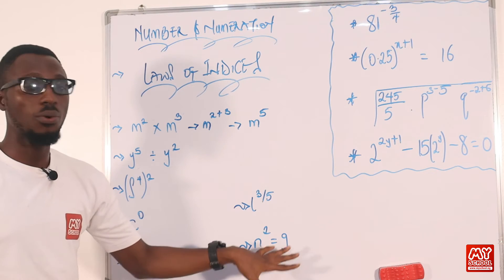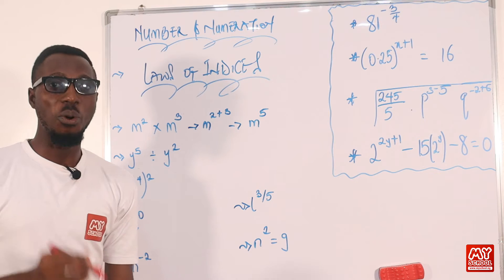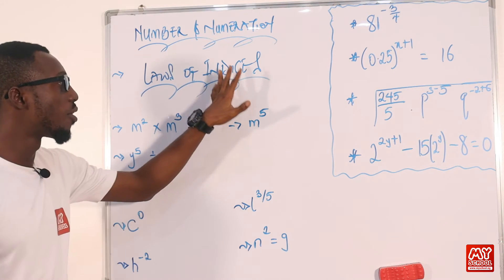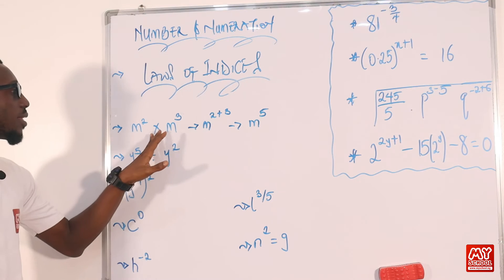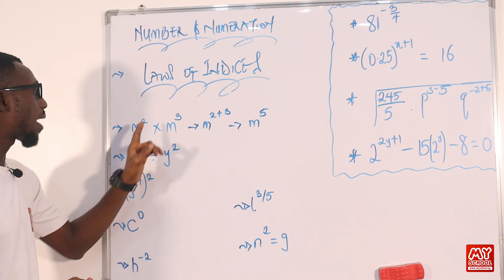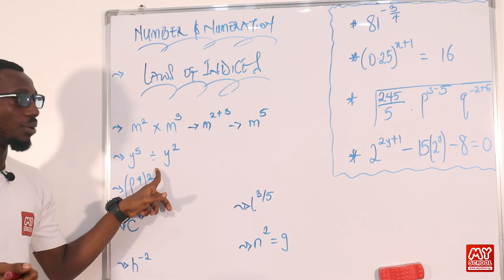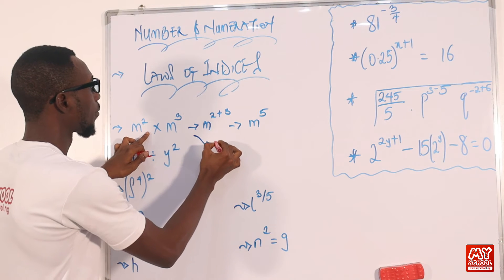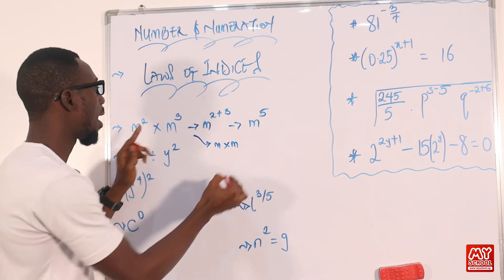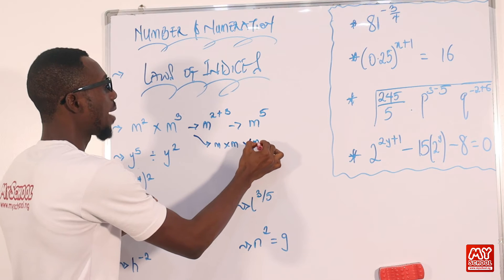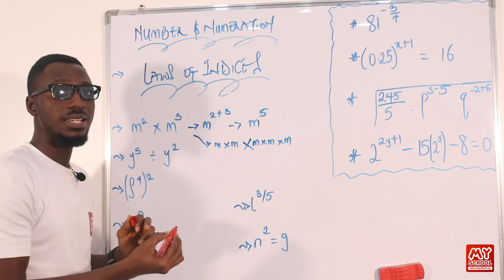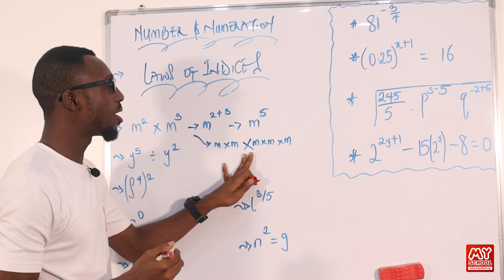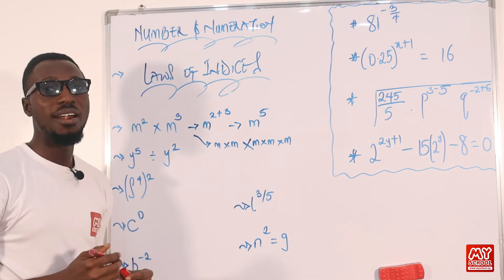Of course, there are conditions we should consider when applying this law. As we go into the fuller video, I'll be sharing those conditions. So you can see: times becomes plus. And if times becomes plus, that means divide turns towards minus. We can see this in another light. M raised to power 2 means M times M, then times M raised to power 3, which means M times M times M. So how many M's do we have? 1, 2, 3, 4, 5 — M raised to power 5. So instead of going this long route, we can just add the powers and arrive at the answer.